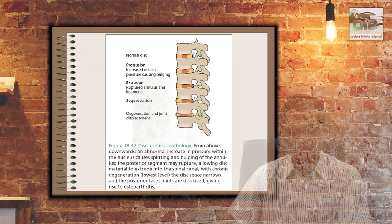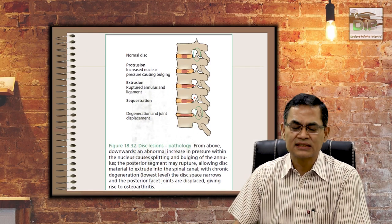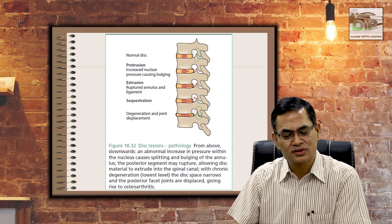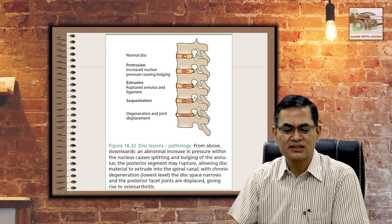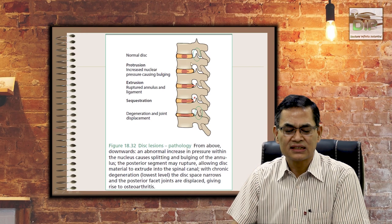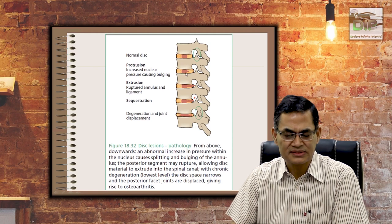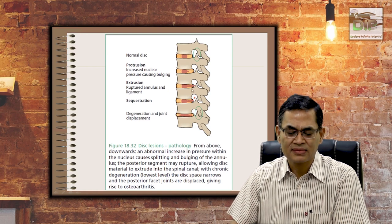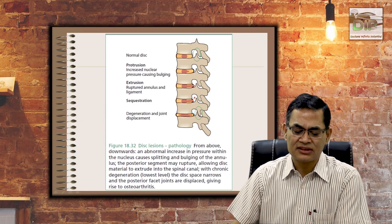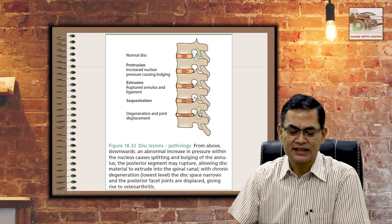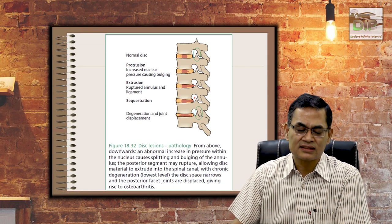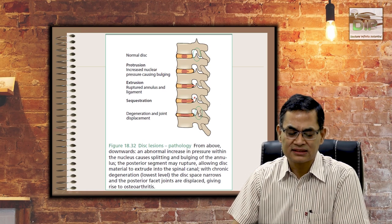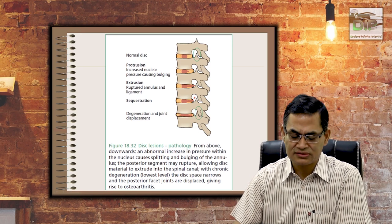Looking at this diagram — though it shows thoracolumbar spondylosis, what is shown is equally applicable to the cervical spine. The top figure shows a normal disc and normal facet joint relationship. As you go down, disc height decreases, and the protruding disc can compromise the intervertebral foramina and spinal canal. Facet joint arthropathy and osteophyte formation follow, further compressing the nerve roots or cord itself.